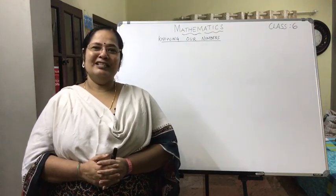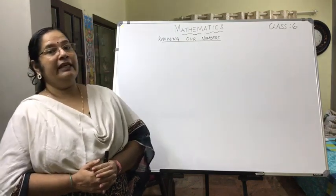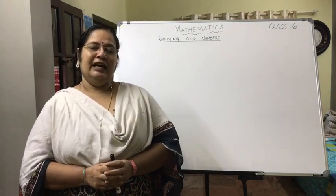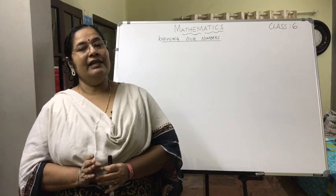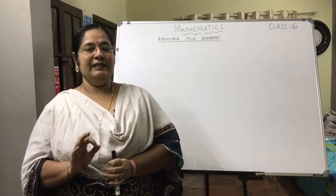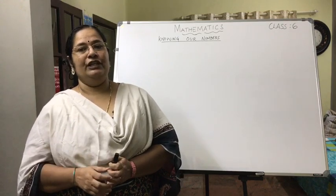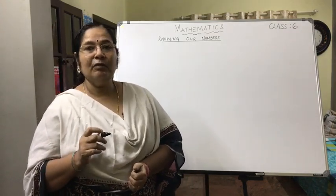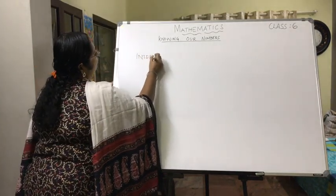Hello, my dear children, welcome back to the maths class. Last day we have seen about numeration systems — specifically the Indian system of numeration. We learned that in the Indian system there are four periods, each divided into two places, except the ones period which is divided into three places. We saw how to write the number name and numeral. Today we will be dealing with the second type: the international system of numeration.